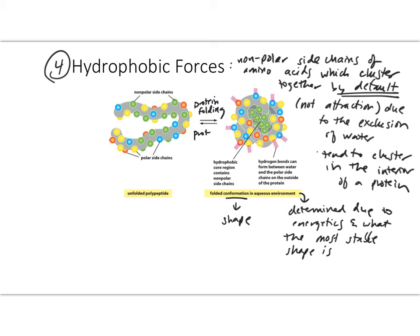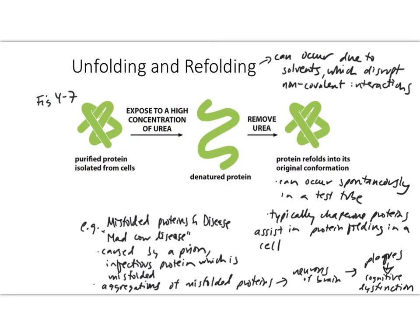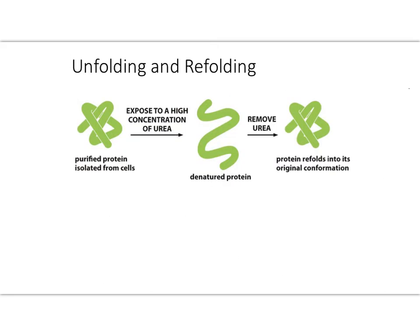So let's talk a little more about protein folding. This figure is figure 4-7 in your book. So protein folding and refolding, this can be due to solvents that a particular protein is exposed to. And these solvents disrupt the non-covalent interactions.